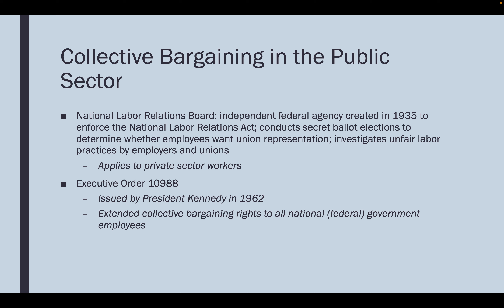This begins to change at the end of the 1950s and early 1960s with Executive Order 10988, issued by President Kennedy in 1962, which extended collective bargaining rights to all federal government employees. The state of Wisconsin was actually the first state to grant some public employees the right to collectively bargain, and that was in 1959. So you see in the late '50s and early '60s, there's movement on allowing teachers, police, firefighters, local and state government employees to unionize and collectively bargain.